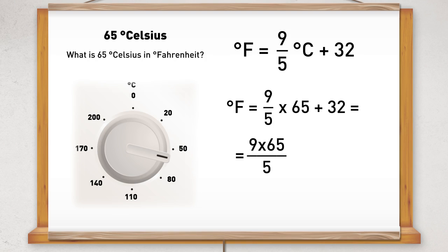So 9 times 65 is 585. 585 divided by 5 is 117. And 117 plus the 32 is 149 degrees Fahrenheit.